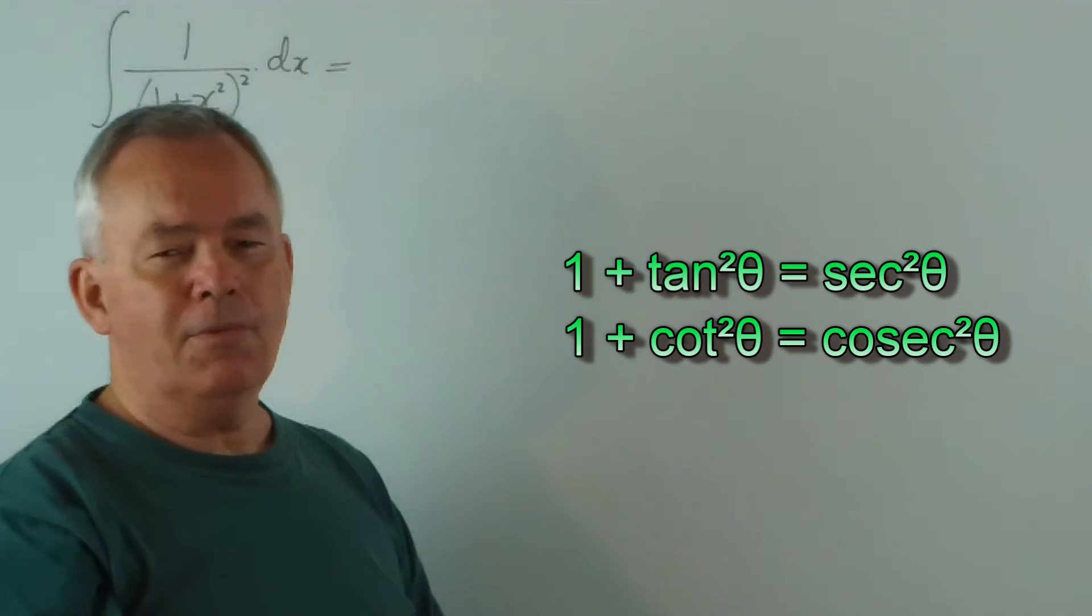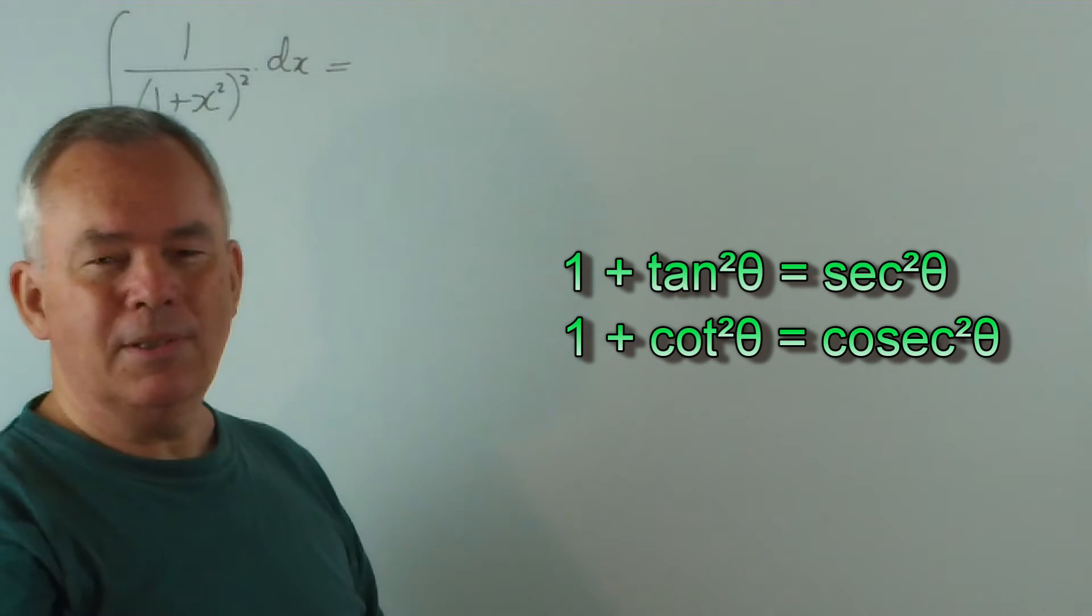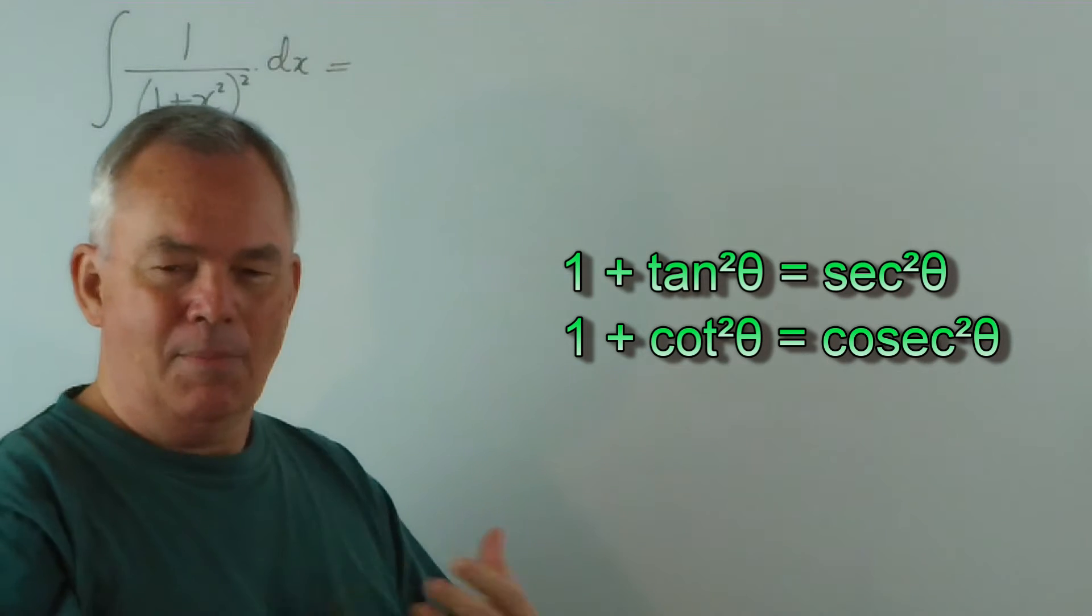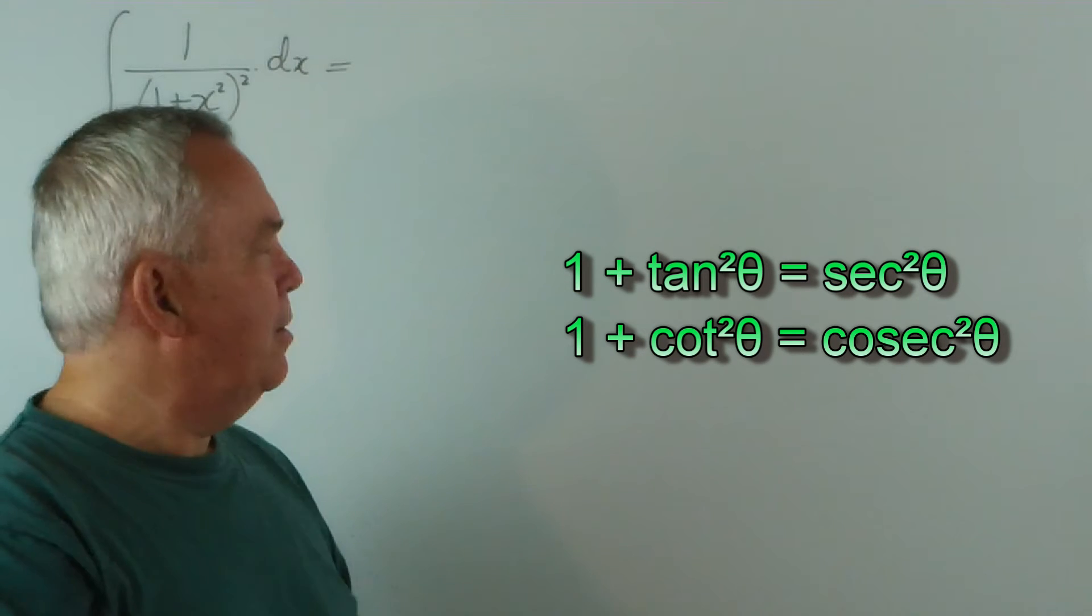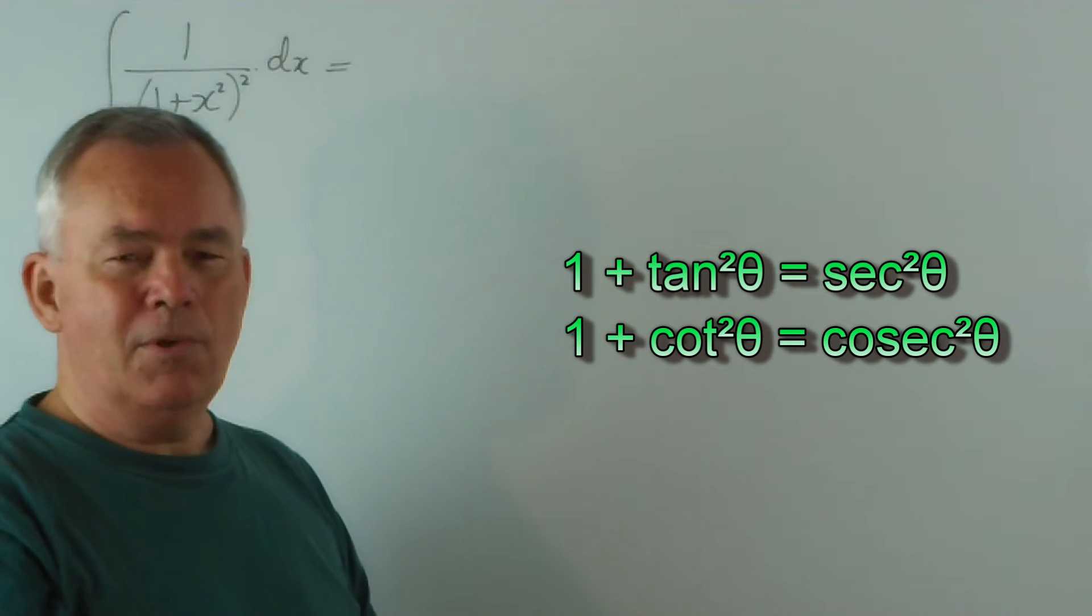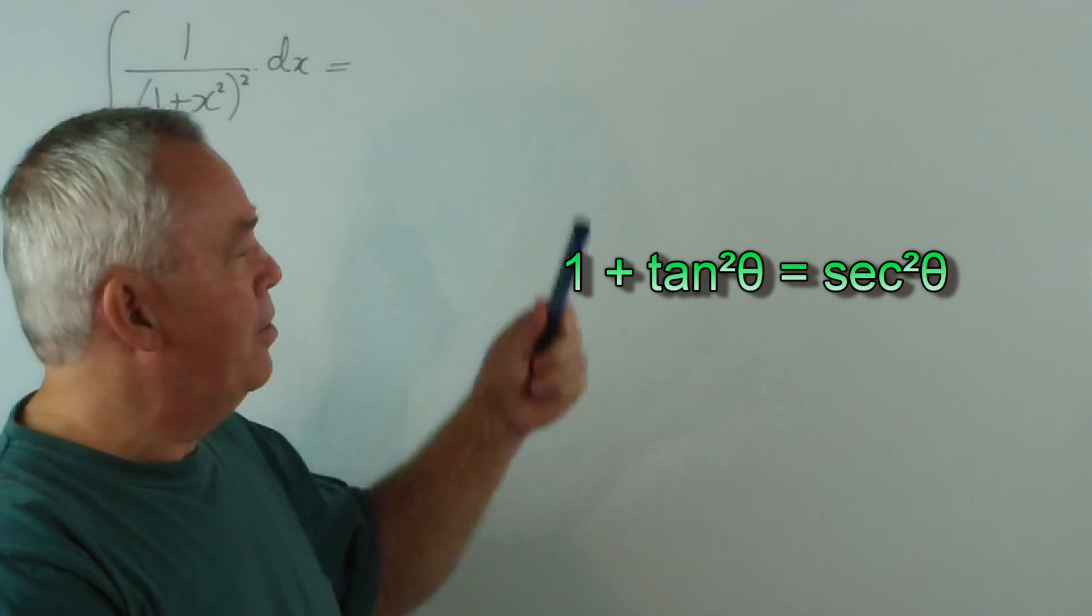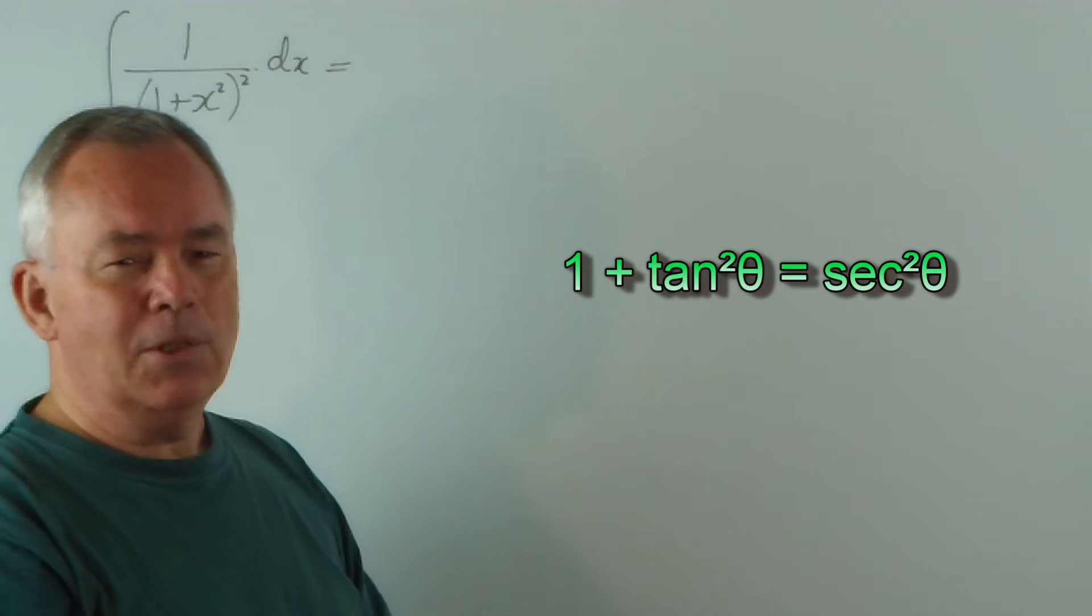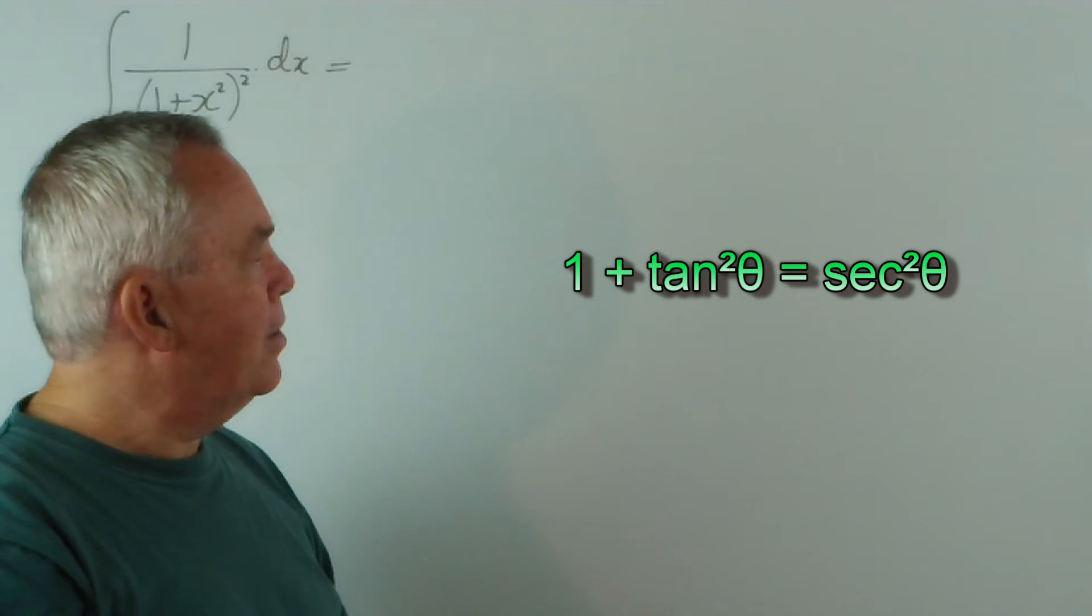If you look at the next two identities, you see that on the left-hand side we have 1 plus a square, which is exactly what we have here. So we could choose either of them. Now, the bottom equation uses ratios that we don't normally think about or use a great deal, that is, cotangent and cosecant. We would find them more confusing. So we're going to use the middle identity, which is 1 + tan²θ = sec²θ.